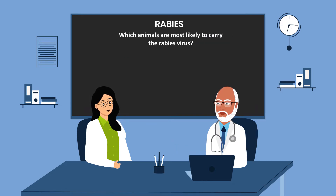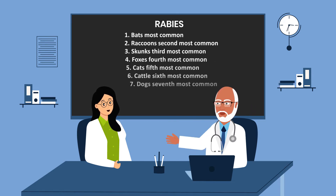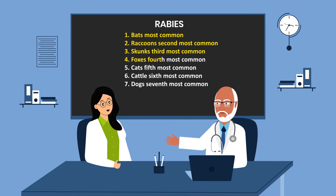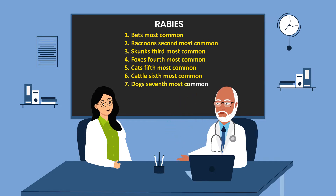Which animals are most likely to carry the rabies virus? In order of descending frequency: bats are the most common, raccoons the second most common, skunks the third most common, foxes the fourth most common, cats the fifth most common, cattle the sixth most common, and dogs the seventh most common.